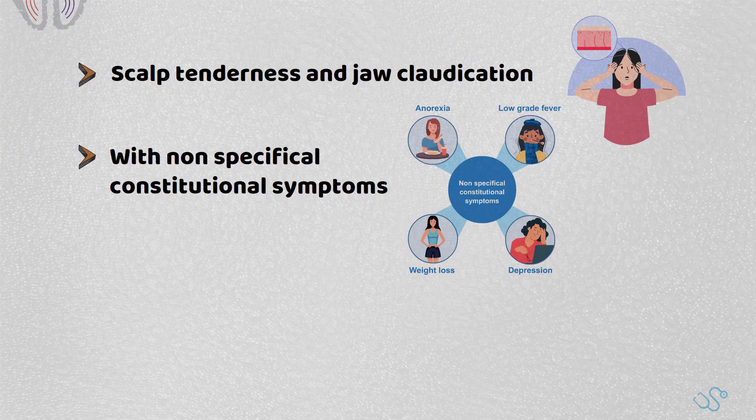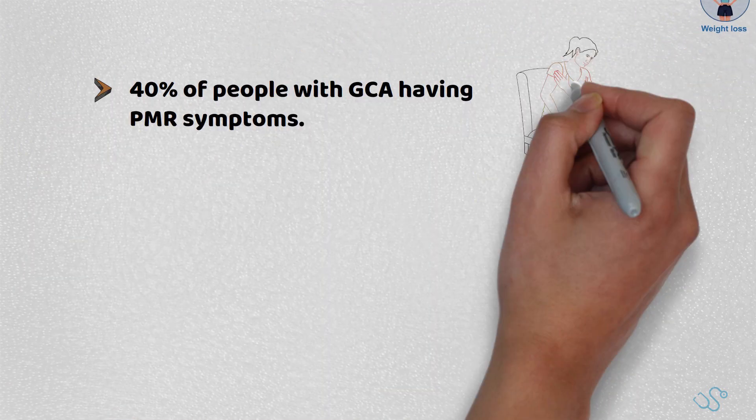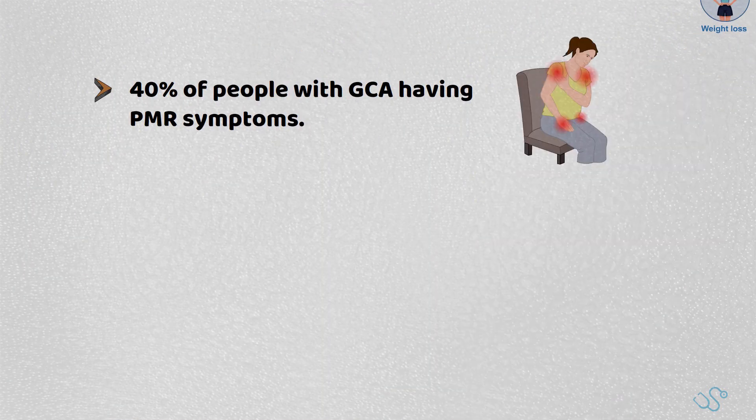As you may remember from medical school, there is an overlap with Polymyalgia Rheumatica, with 40% of people with giant cell arteritis also having Polymyalgia Rheumatica symptoms.